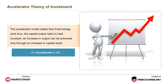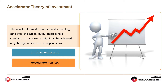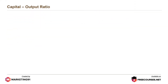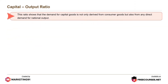Delta I equals accelerator into Delta C. Thus, accelerator equals Delta I divided by Delta C. The capital output ratio shows that the demand for capital goods is not only derived from consumer goods but also from the direct demand for national output.